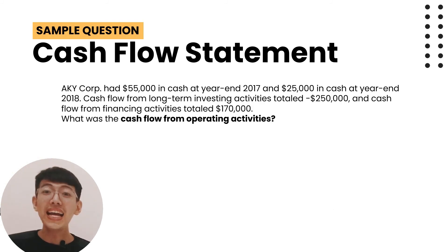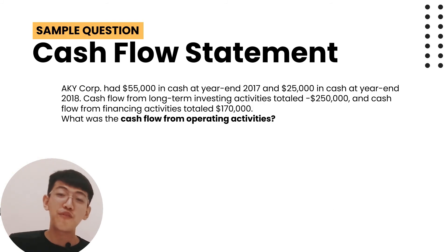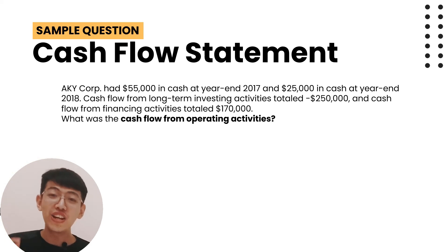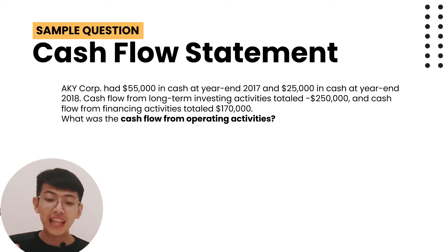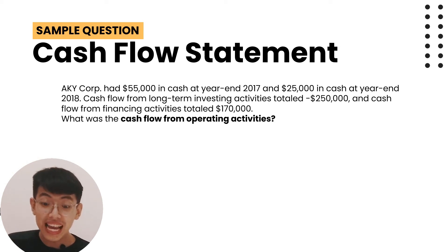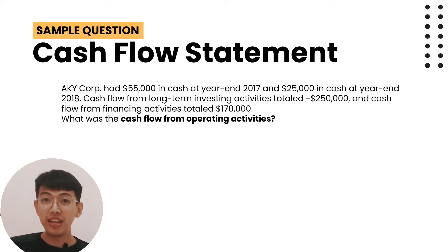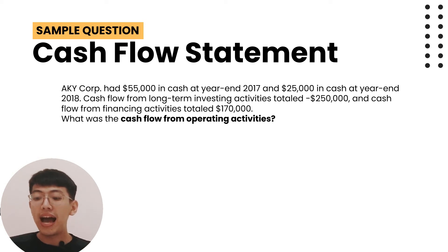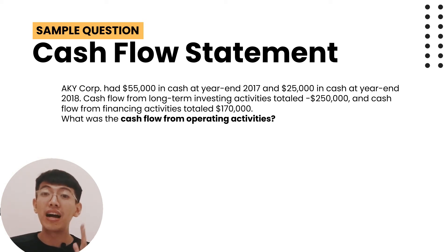We can see that the cash and equivalent balance in the balance sheet is 10 dollars. Now let's test ourselves. AKY Corporation had 55,000 dollars in cash at year-end 2017 and 25,000 dollars in cash at year-end 2018. Cash flow from investing activities totaled minus 250,000 dollars and cash flow from financing activities totaled 170,000 dollars. What was the cash flow from operating activities?